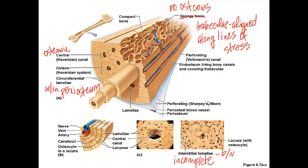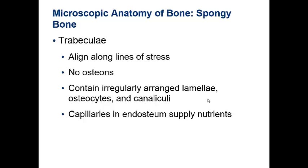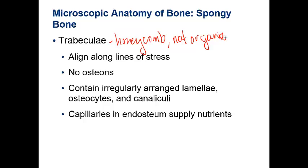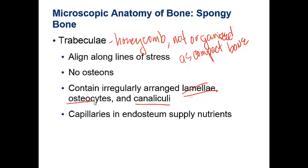The trabeculae structure looks somewhat like a honeycomb and is not nearly as organized as compact bone. It still contains many of the same structures — lamella, osteocytes, and canaliculi — they're just not arranged as precisely as in compact bone.